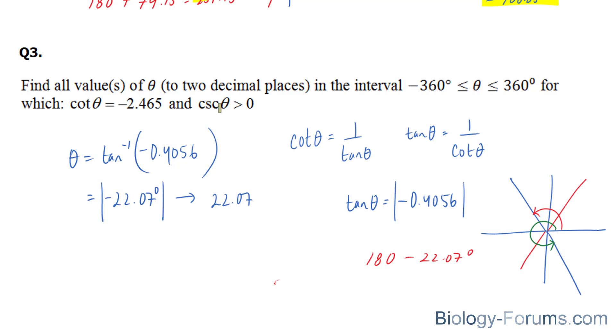We're going to find out what this angle is by taking 180 minus 22.07. And if you remember, the question said that another restriction is that cosecant has to be greater than 0. Now, cosecant is defined as 1 over sine,